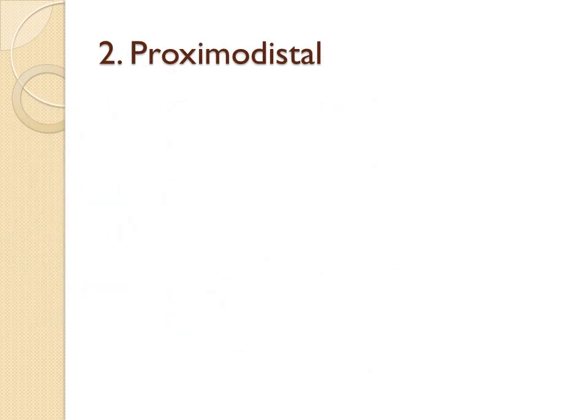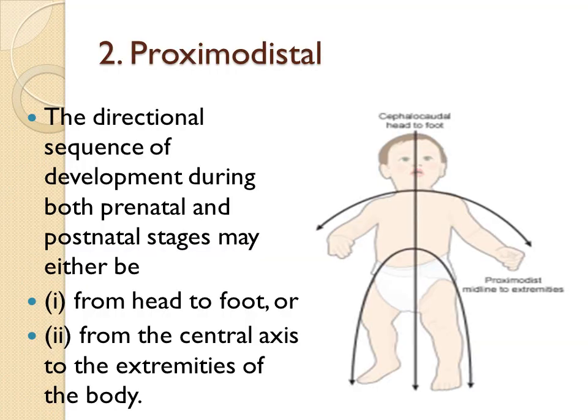The second principle is Proximodistal. The directional sequence of development during both prenatal and postnatal stages may either be from head to foot or from the central axis to the extremities of the body. The spinal cord develops before the outer parts of the body. The child's arms develop before the hands. The hands and feet develop before the fingers and toes. Fingers and toe muscles are the last to develop in physical development.